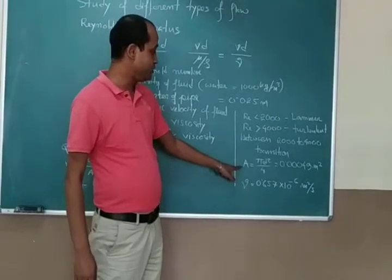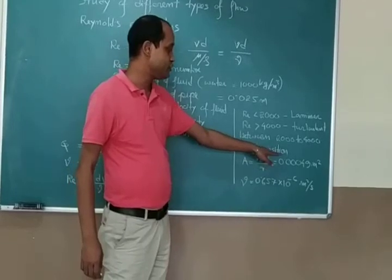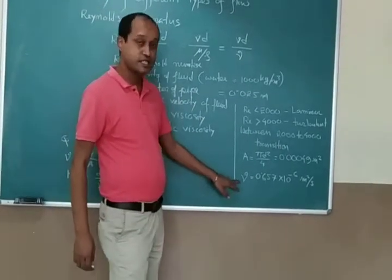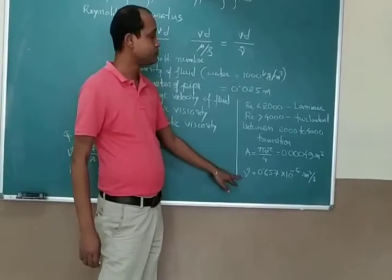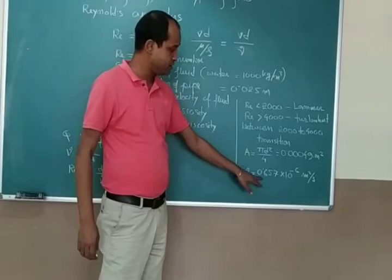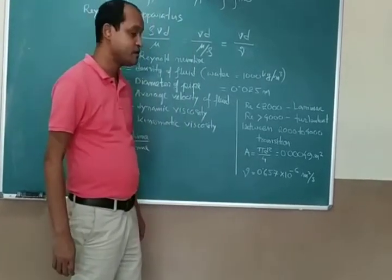And area, we can find pi d square by 4 which is 0.0049 meter square. Here, kinematic viscosity for water at 40 degrees is given 0.657 times 10 to the negative 6 meter square per second.